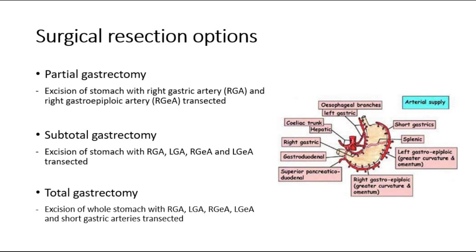The surgical resection option depends on where the tumour is located. Total gastrectomy means removal of the whole stomach with all five arteries transected, and is usually done when the tumour is at the proximal region of the stomach. If it is at the distal region, partial or subtotal gastrectomy can be considered.